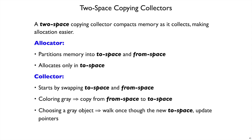We could implement the garbage collection algorithm by literally making space in an object for colors like white, gray, and black, but it turns out there's another way to implement it that's easier — it indirectly colors things as white or black. It's called a to-space copying collector.